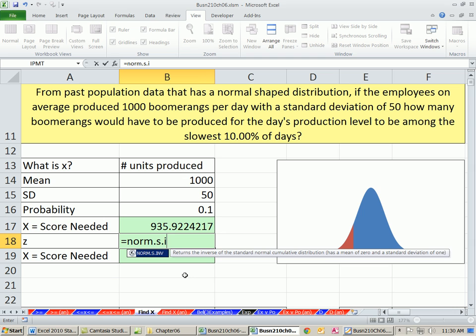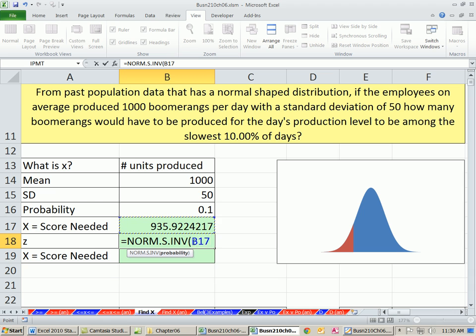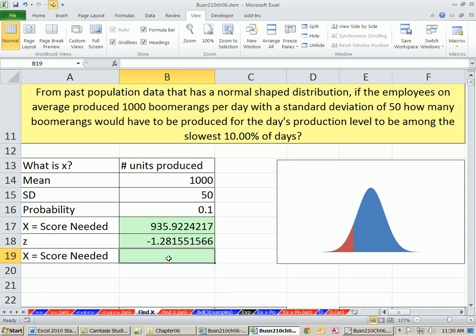The inverse functions give us either an X or Z. In this case, it's the S, so it'll spit out a Z. We need the probability, and this is on the low end, so we enter 0.1. So it's minus 1.29 standard deviations that constitute the 10% slowest days.